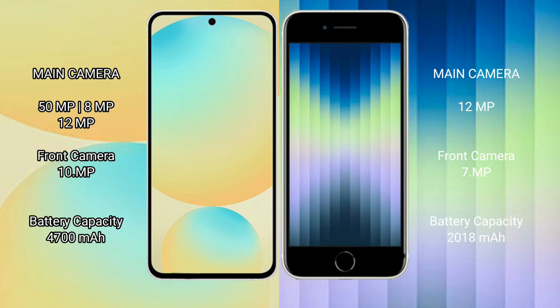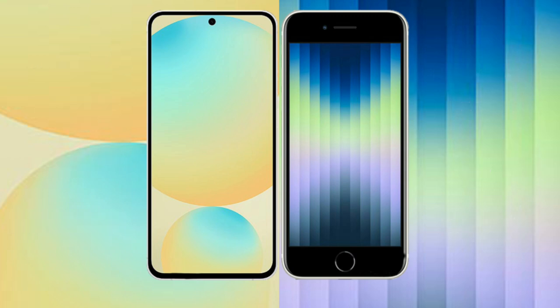The iPhone SE has a rear single camera setup with an 8MP, 12MP lens and a 7MP front camera. The Samsung Galaxy S24 FE has a 4600mAh battery with 25W fast charging support, while the iPhone SE has a 2018mAh battery with 20W fast charging support.